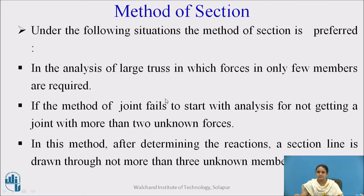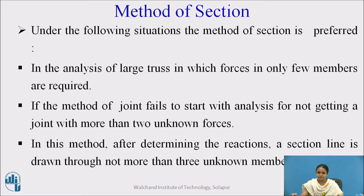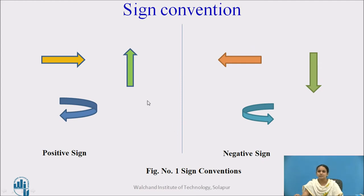Whenever you are not able to start with the method of joint — normally we start the analysis of a frame from the joint where you get only two unknowns, because we have two equilibrium equations: summation Fx and summation Fy — in cases where you cannot find a joint with only two unknowns, you have to go for the method of section. In the method of section, you have to pass the section line through only three members whose forces are unknown.